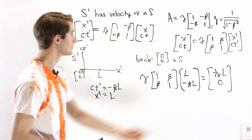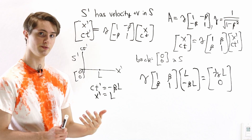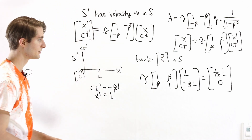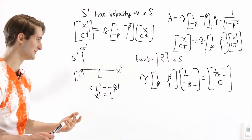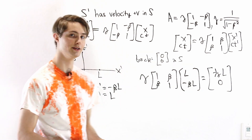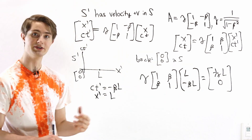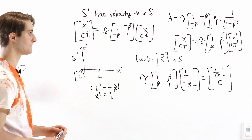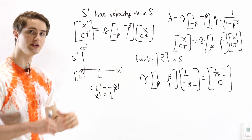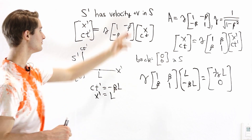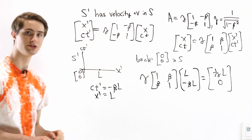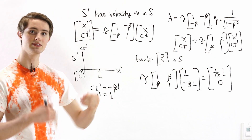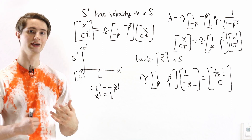We can write gamma times 1 minus beta squared times L as just 1 over gamma times L. Now we know 1 minus beta squared is less than 1, so the denominator is less than 1, which means gamma is bigger than 1, and that means 1 over gamma is less than 1. So 1 over gamma times L is less than L. The object is shorter in the reference frame where it's moving. The result for length contraction is that if you have an object moving at velocity v in reference frame S, the length observed is 1 over gamma times the length when it's stationary.